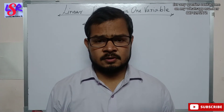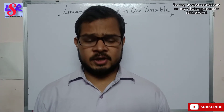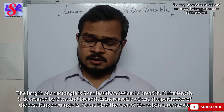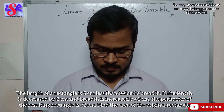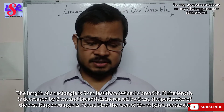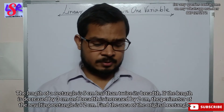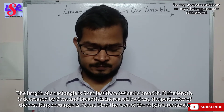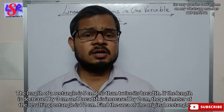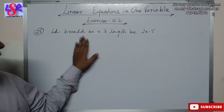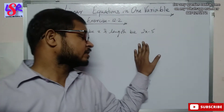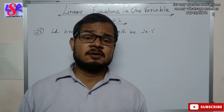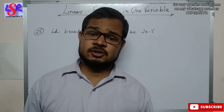In question 25, the length of a rectangle is 5 centimeters less than twice its breadth. If the length is decreased by 3 centimeters and breadth is increased by 2 centimeters, the perimeter of the resulting rectangle is 72 centimeters. Find the area of the original rectangle. Let the breadth be x, and the length be 2x minus 5, as the length is 5 centimeters less than twice the breadth.